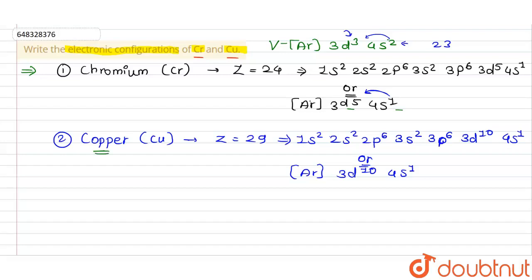Before copper is nickel, with atomic number 28, having configuration [Ar] 3d⁸ 4s². Moving to copper, it should be 3d⁹ 4s², but just as with chromium, a fully-filled orbital is more stable. So one electron is shifted from 4s to 3d, giving copper the configuration [Ar] 3d¹⁰ 4s¹, making the d orbital completely filled.